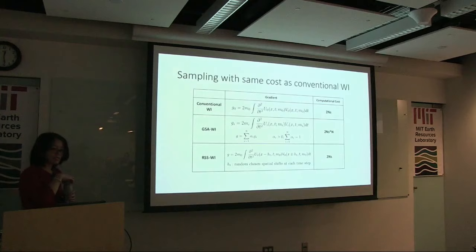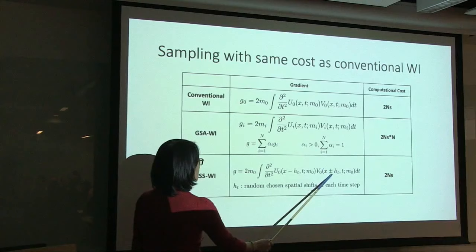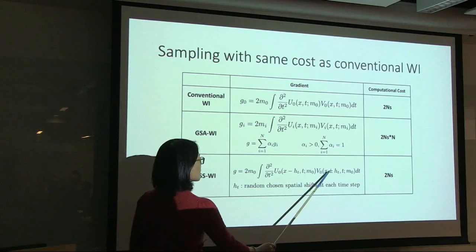The key conclusion is that to efficiently sample the model space, we only need to perform random spatial shifts of the source and receiver wave fields. For the forward scattering problem — which is most FWI — shift them in the same direction. For the imaging or reflection problem, shift them in two different directions. For the reflection problem, this corresponds to what is conventionally called subsurface offset, but here we give it a new meaning: the sampled velocity field reflected in the wave field itself.